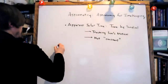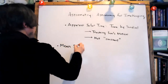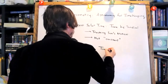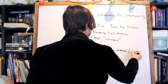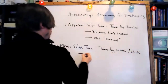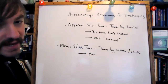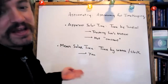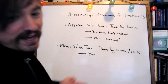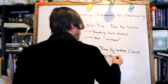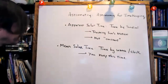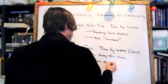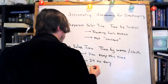Mean solar time is the time we all collectively keep on our iPhones, computers, and watches. It's the basis for the start time of our class. Mean solar time is constructed so that at 12 noon, the sun will approximately be on your meridian — to within a maximum of 20 minutes, because that's the maximum drift the sun can have. Mean solar time is time by a watch or time by a mechanical clock, and it has a 24-hour day with uniform hours.